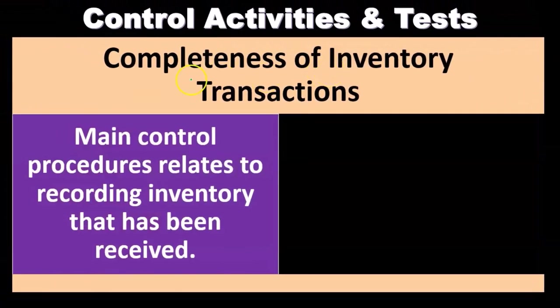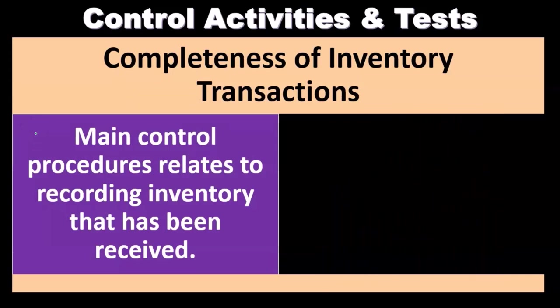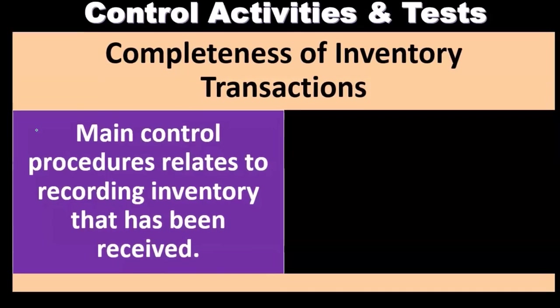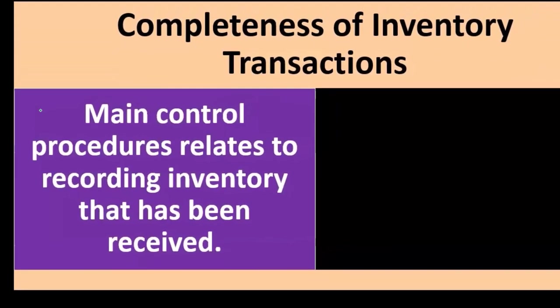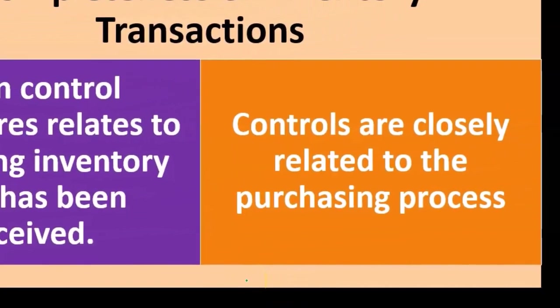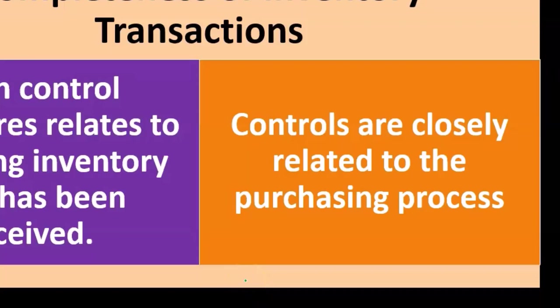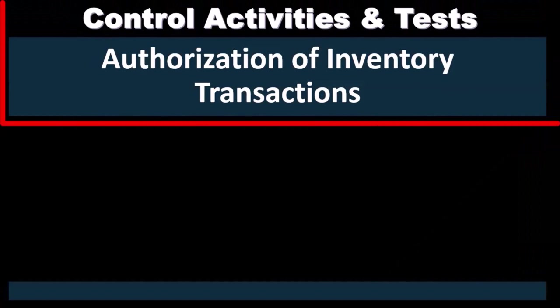For inventory transactions with the assertion of completeness, the main question is whether we have recorded all inventory that has been received. Are there inventory items or transactions not being recorded or processed? This is closely related to the purchasing process, and we can review the procedures within the purchasing process regarding the receipt and recording of inventory for the completeness assertion.